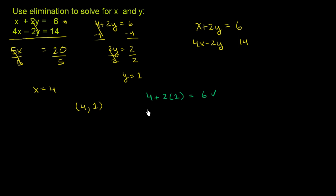And then in the second equation right over here, you have 4 times 4 minus 2 times 1. This is equal to 16 minus 2, which does indeed equal 14. So it definitely does satisfy both of these equations. So we're done. x is equal to 4 and y is equal to 1.